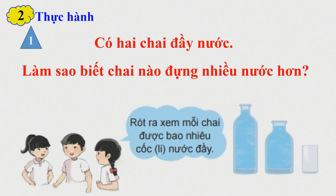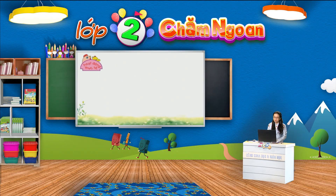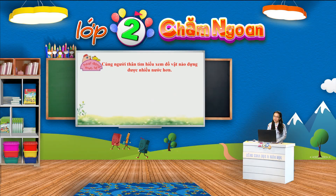Và ngược lại. Phần thực hành này các em hãy cùng với ba mẹ hoặc anh chị thực hành ở nhà để chúng ta biết được sức chứa của các vật. Hằng ngày xung quanh các em có rất nhiều vật như bình, chai, can có sức chứa khác nhau. Các em cần để ý xem vật nào chứa được nhiều hơn hay ít hơn nhé. Chúng ta cùng đến với phần hoạt động thực tế. Ở phần hoạt động này chúng ta sẽ cùng người thân tìm hiểu xem đồ vật nào đựng nhiều nước hơn. Ví dụ, chúng ta hãy quan sát xem cái nồi này đựng nhiều nước hơn cái nồi kia hay cái nồi kia đựng ít nước hơn cái nồi này. Cô hy vọng rằng các em sẽ thực hiện tốt ở nhà với người thân của mình nhé.